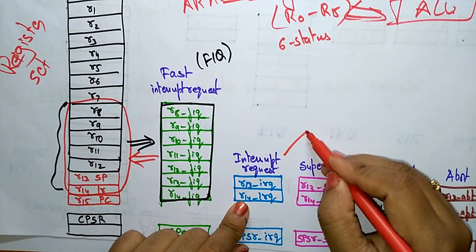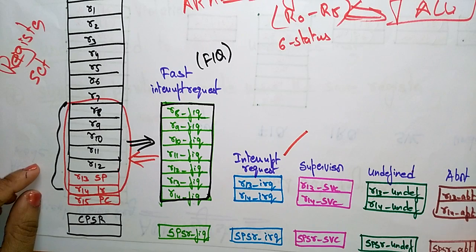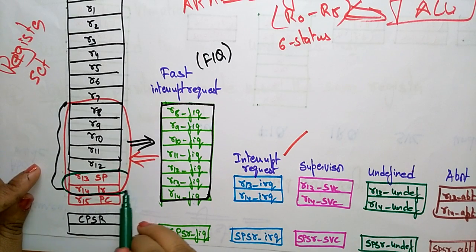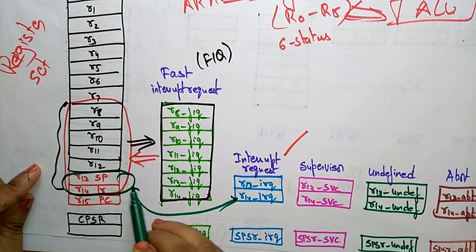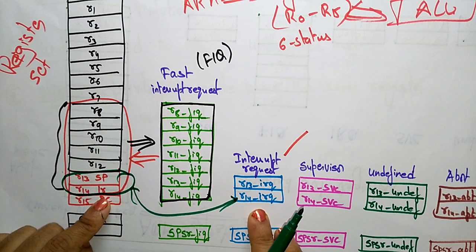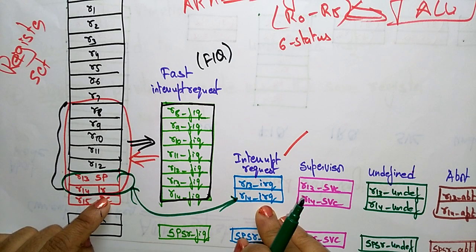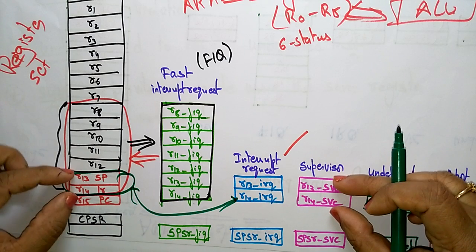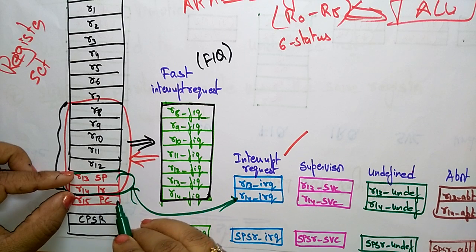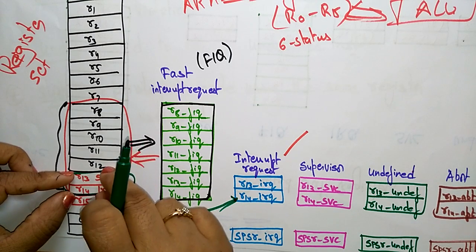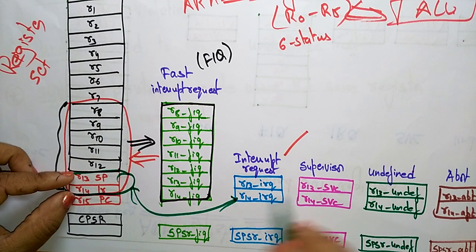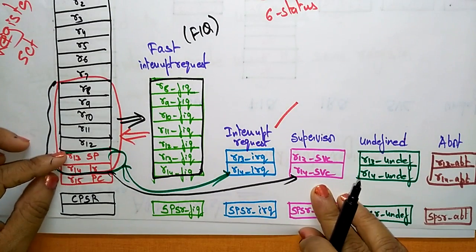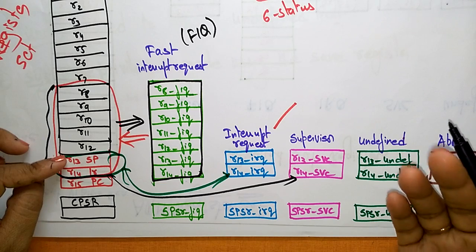For interrupt request mode, only R13 and R14 are replaced — R13 becomes R13_irq and R14 becomes R14_irq. When the processor sees this, it understands an interrupt request has been raised. For supervisor mode, similarly only R13 and R14 — the stack pointer and link register — are replaced with R13_svc and R14_svc.